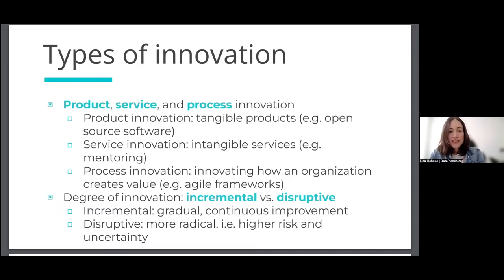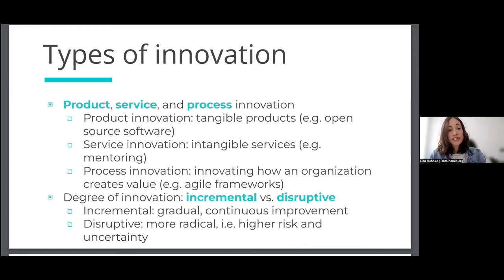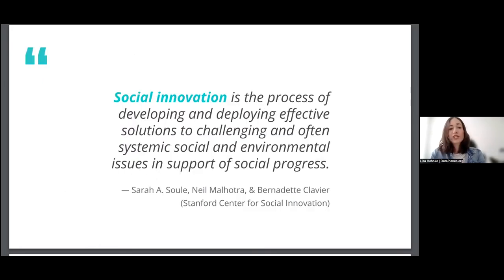One important distinction is also the degree of innovation — you can distinguish between incremental and disruptive innovation. The Apple iPhone would be an example of disruptive innovation, building something based on needs they created. With design thinking, we often have incremental innovation: gradual, continuous improvement. And there are a lot of definitions of social innovation; one I personally like is that it's the process of developing and deploying effective solutions to challenging and often systemic social and environmental issues in support of social progress.